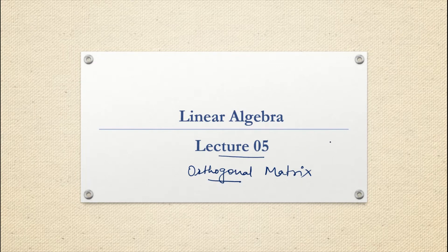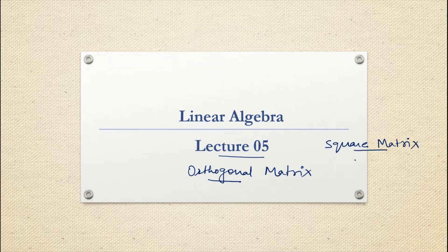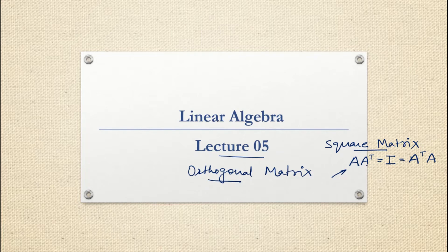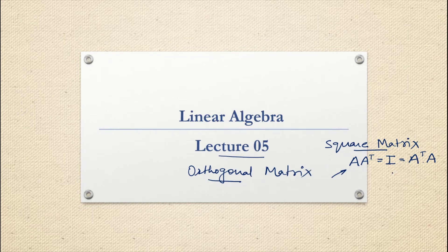An orthogonal matrix is a square matrix. If we write AAT = I = ATA, then the matrix is orthogonal. Suppose the matrix A is of order n×n — the product of this matrix A and its transpose AT gives me the identity matrix of order n, and the product of AT and A also gives the identity matrix of the same order. If this condition is satisfied, then we say matrix A is an orthogonal matrix.